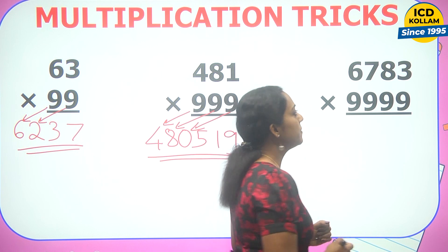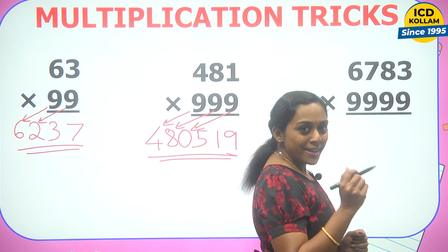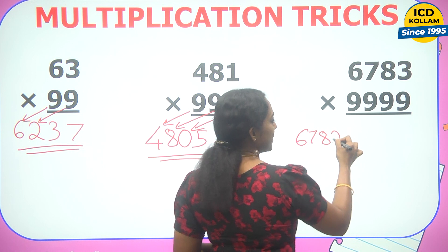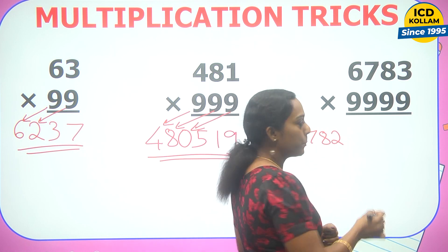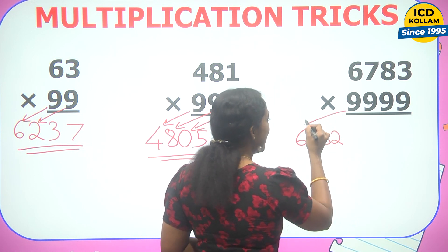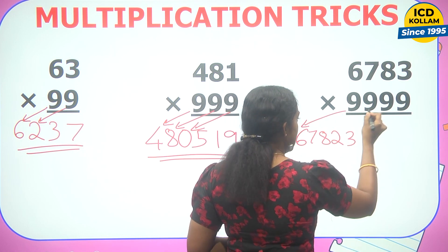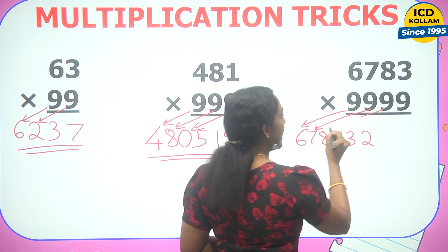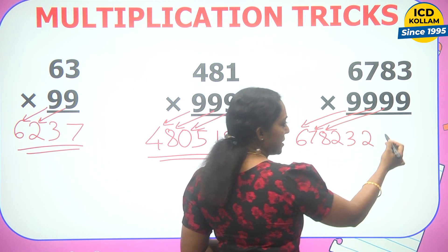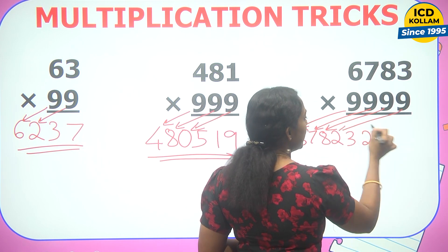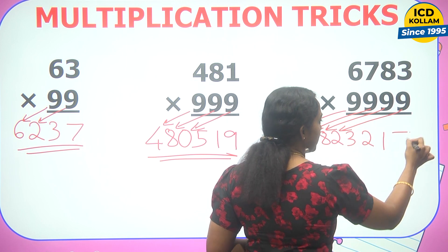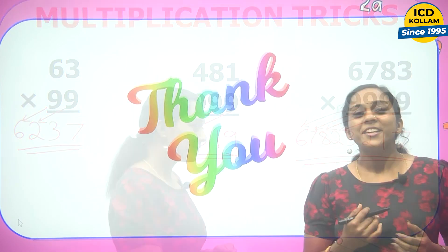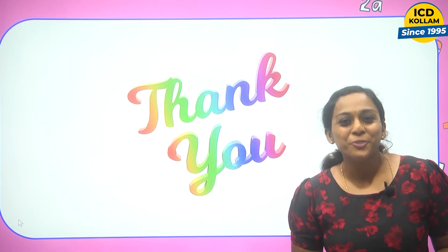Next question: 6783 into 9999. Step one: 6783 minus 1 equals 6782. Next: 9 minus 6 equals 3, 9 minus 7 equals 2, 9 minus 8 equals 1, 9 minus 3 equals 7. The answer is 67823217. Thank you for watching.